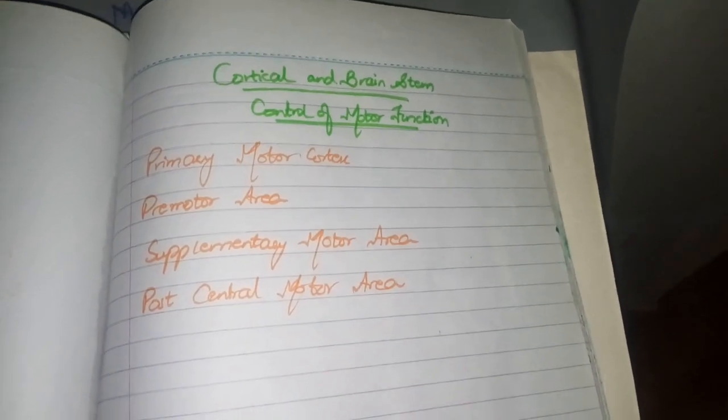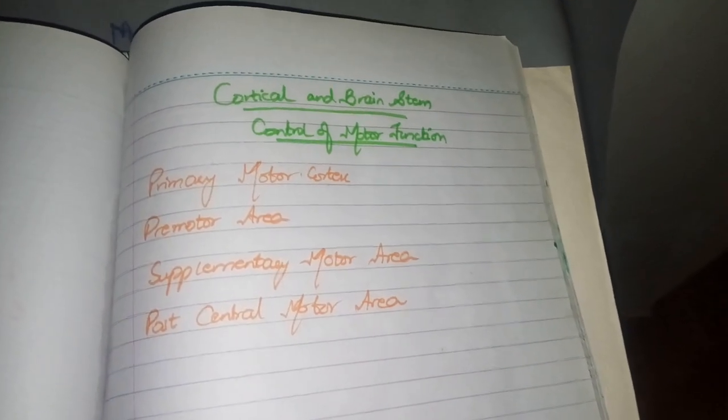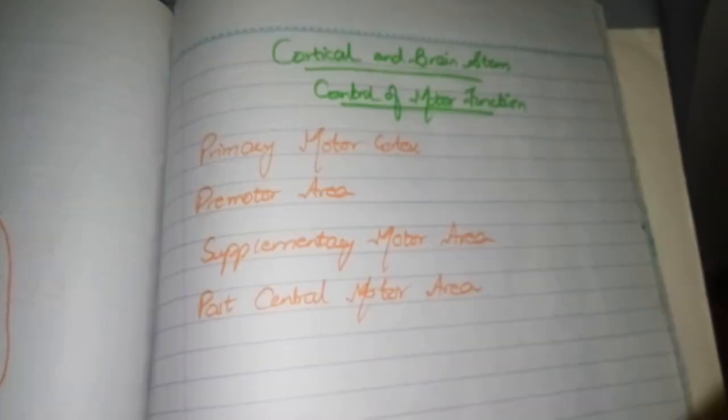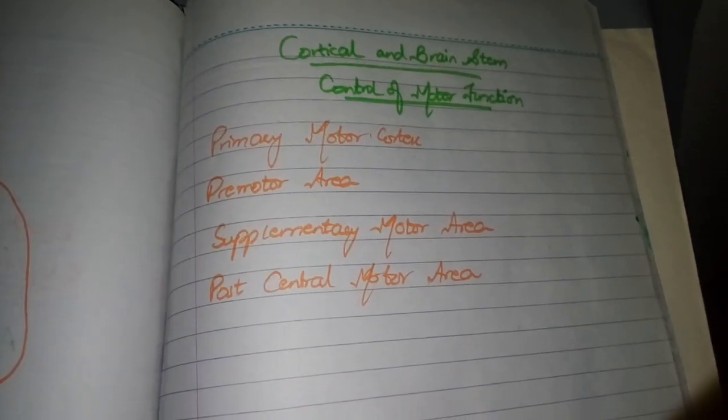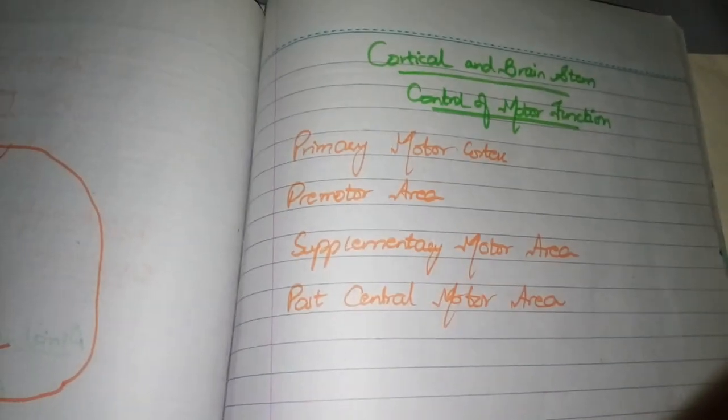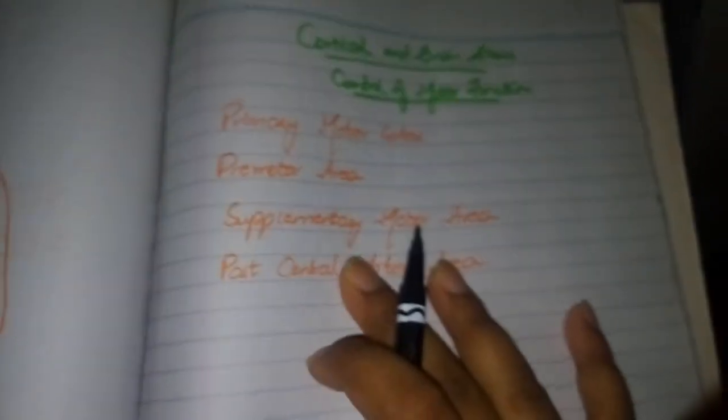This means the motor functions we perform in our body are controlled by our cerebral cortex and brain stem. I will tell you all about this from Guyton's chapter number 56, following this sequence so you will be able to study.